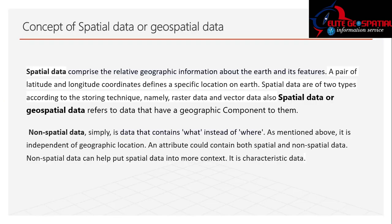We will be looking at the concept of spatial data, or geospatial data. What is spatial data? It comprises the relative geographic information about the earth and its features. A pair of latitude and longitude coordinates defines a specific location on earth. Spatial data are of two types according to storing techniques: raster data and vector data. Geospatial data refers to data that have a geographic component to them.